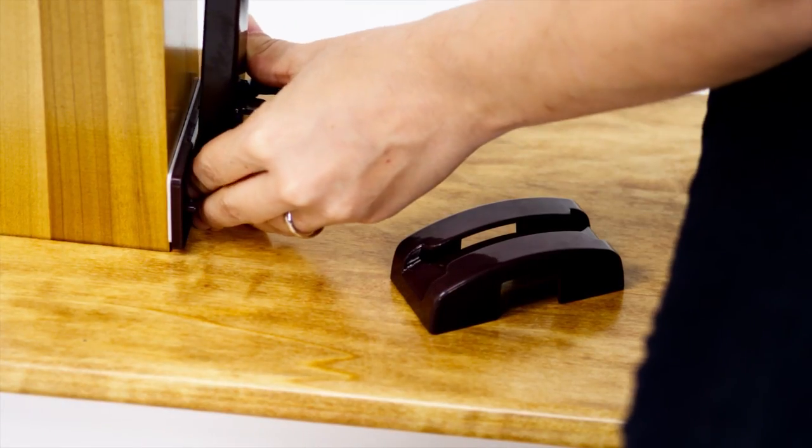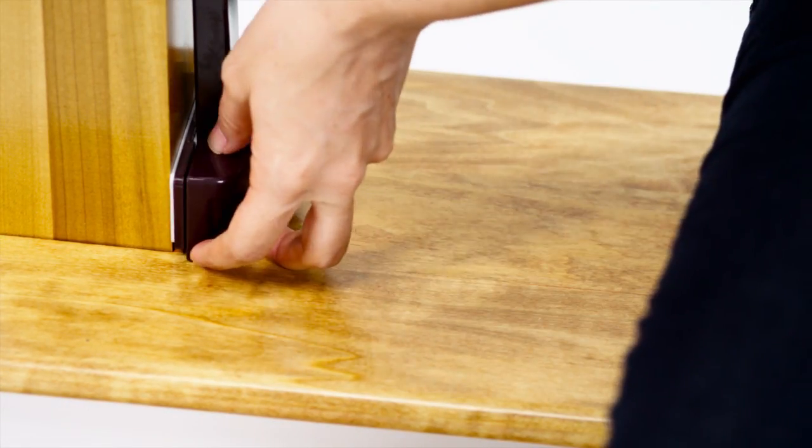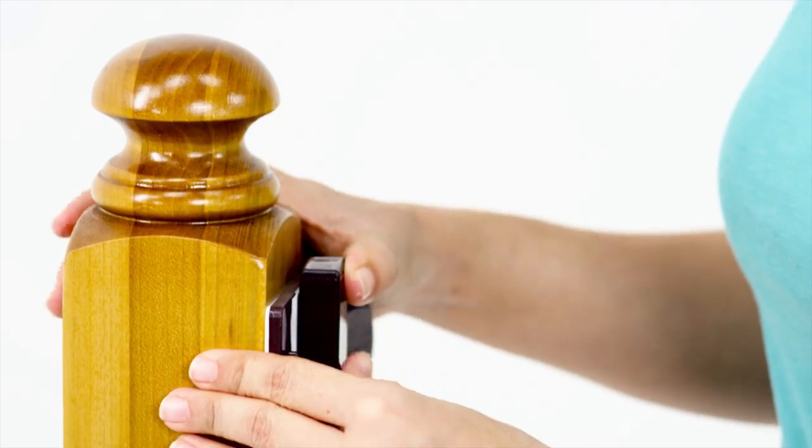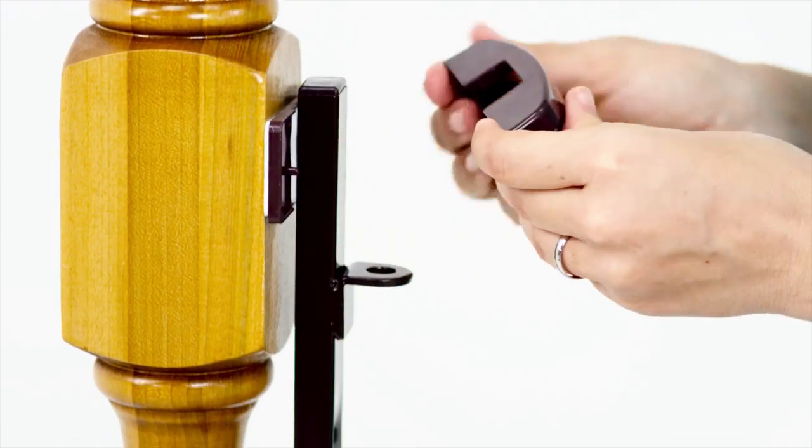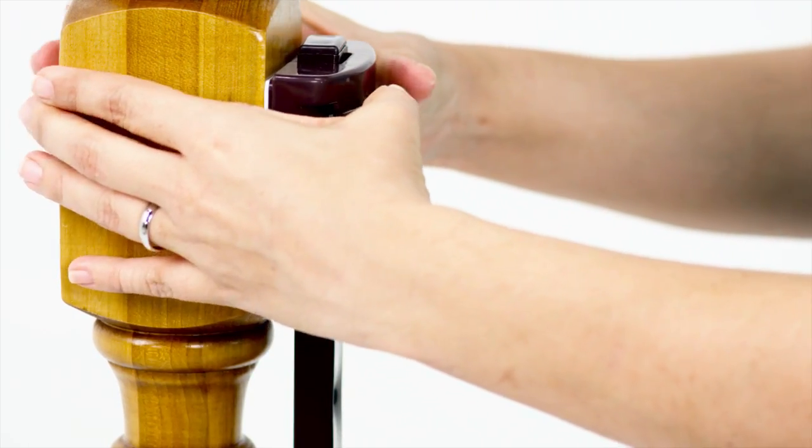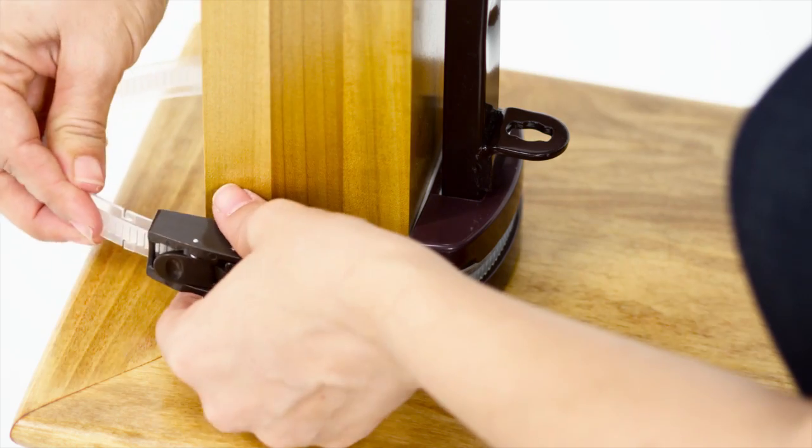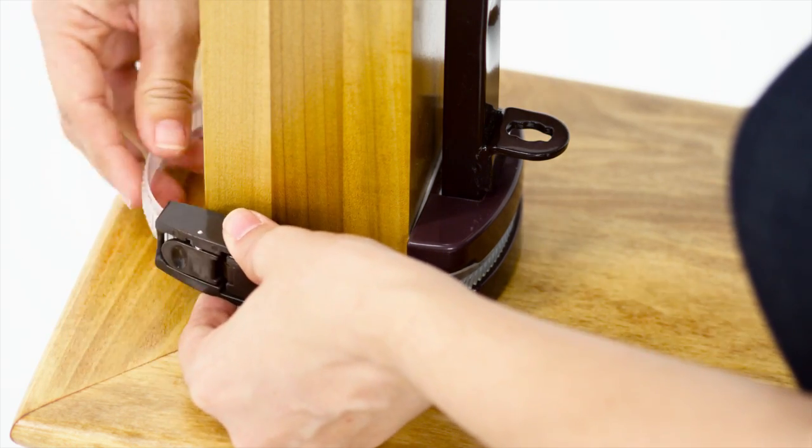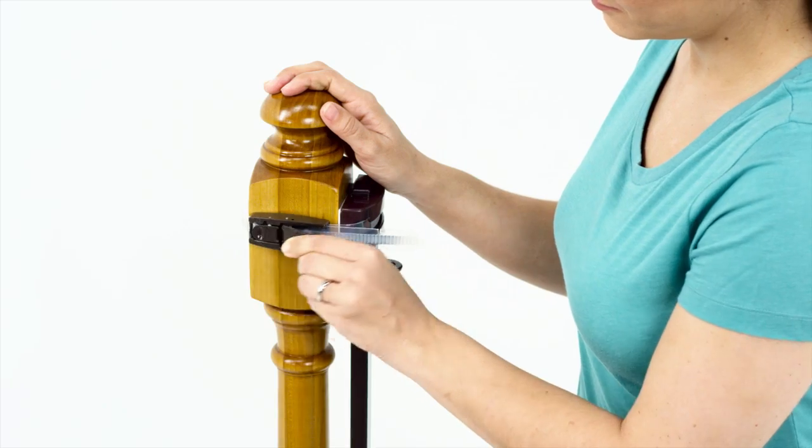Assemble the hinge side support into the adhesive bracket. Assemble a second adhesive bracket around the support. Peel the adhesive backing and press to stick the bracket to the banister. Secure both brackets to the banister by threading the ratcheting straps through the front slots and tightening.